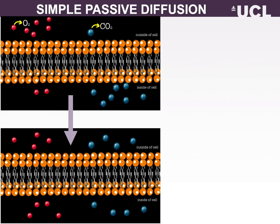Movement of solutes across a membrane can be divided into two basic types: passive diffusion and active transport. Passive diffusion requires no additional energy source other than what is found in the solute's electrochemical concentration gradient and results in the solute reaching equilibrium across the membrane. Passive diffusion can be simple, where the solute crosses the membrane by dissolving into and diffusing through the lipid bilayer. Oxygen and carbon dioxide molecules diffuse across the membrane from higher to lower concentration gradient until equilibrium is reached.